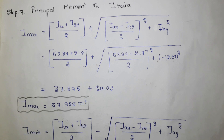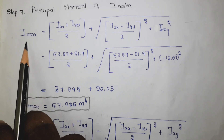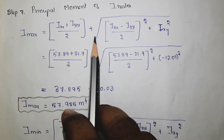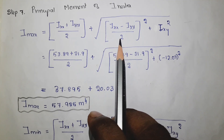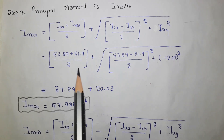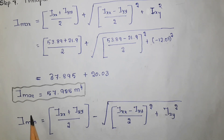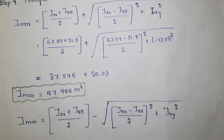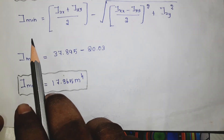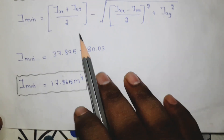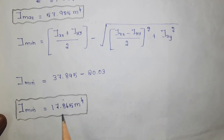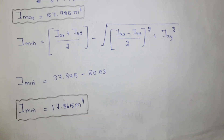Step 7 is finding the principal moment of inertia. The formula for maximum principal moment of inertia is: I_max equals (Ixx + Iyy) divided by 2, plus the square root of ((Ixx minus Iyy) divided by 2) squared plus Ixy squared. Substituting all values, the maximum principal moment of inertia equals 57.925 meter to the power 4. For the minimum, the plus is replaced with minus, giving the minimum principal moment of inertia as 17.865 meter to the power 4.